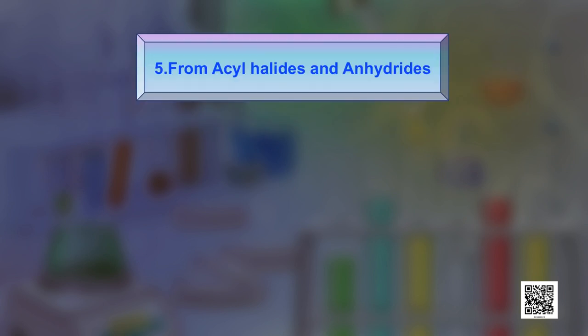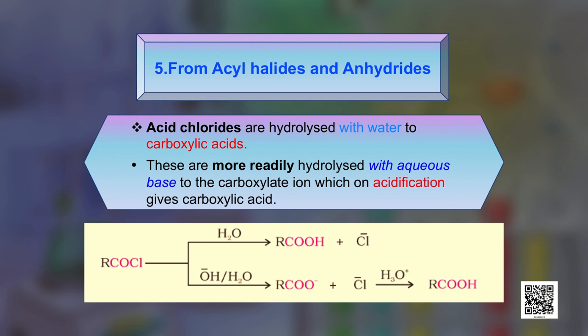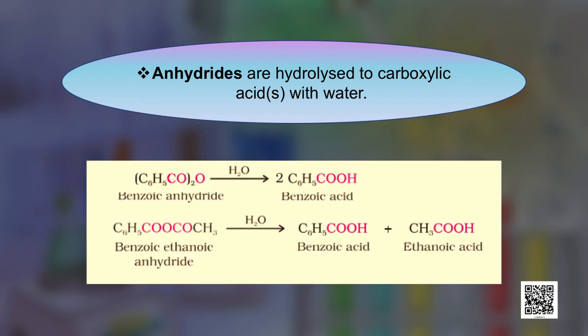The next method starts from acyl halides or anhydrides. Acid chlorides are hydrolyzed with water to carboxylic acids, but are more readily hydrolyzed with aqueous base to the carboxylate ion, which on acidification gives the carboxylic acid. Similarly, anhydrides are hydrolyzed to carboxylic acids simply with water.